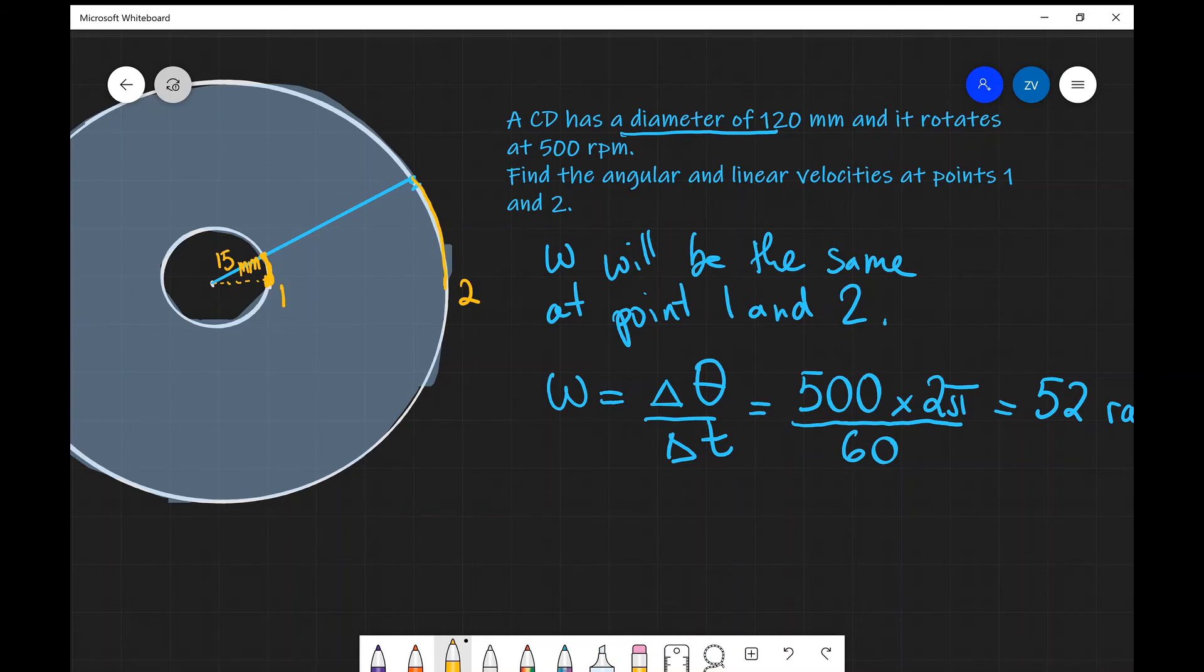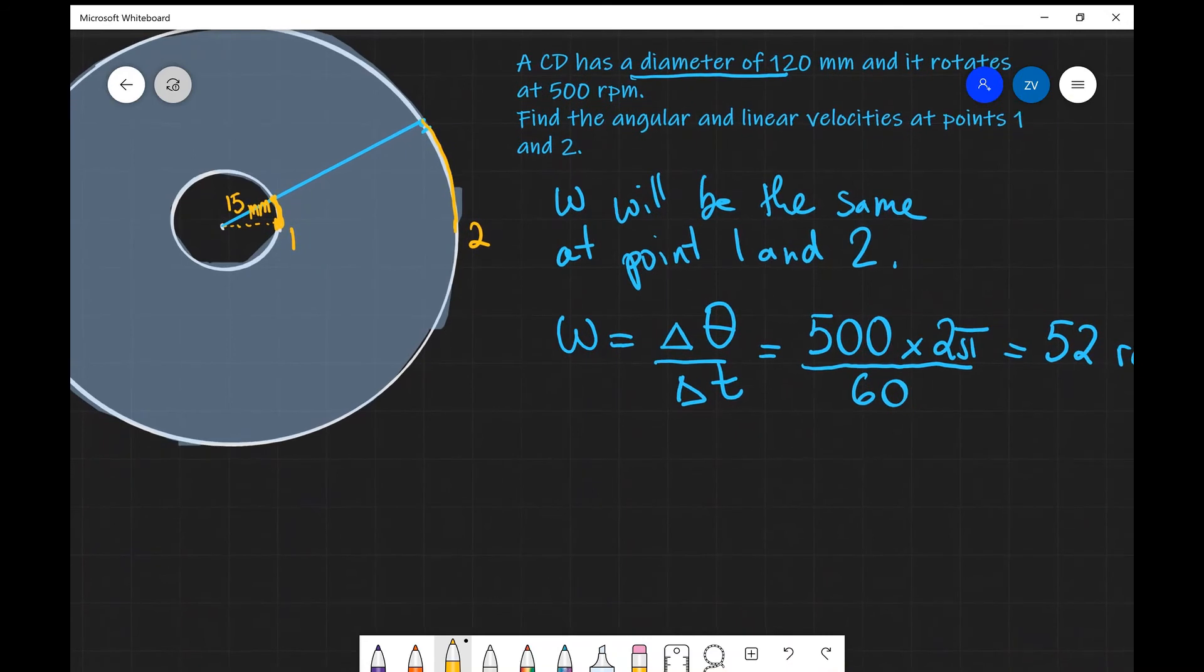Whereas point 2, in order to go through the same angle, it's going to have to cover a much larger distance. Let's calculate the linear speed at point 1 to begin with.